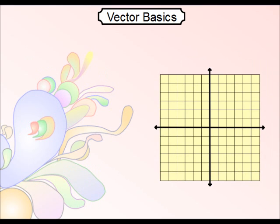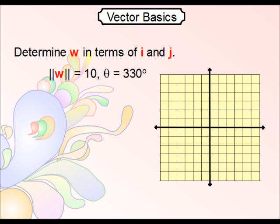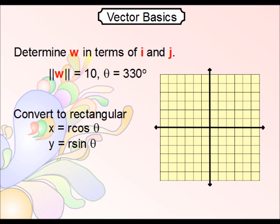Last but not least, let's do something like this. Let's say you're given the magnitude of a certain vector, and you're given an angle which it is pointing at. Write this vector in terms of i and j. Well, the way you would do this is the way you would convert polar coordinates, in that you would convert them to rectangular by using these particular formulas.